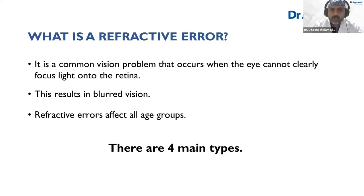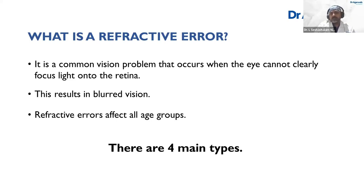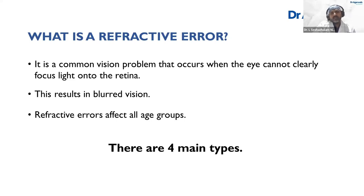A refractive error is a common vision problem where the eye cannot focus light sharply onto the retina, and therefore images feel a little blurred. It affects all kinds of age groups. The most common type is called myopia or nearsightedness — this is what most of you will have as a minus power in your spectacle correction. In myopia, the optical apparatus of your eye — the cornea and the lens — is a little overpowered and focuses light short of the retina. It can also happen if your eyeball is a little longer than usual.